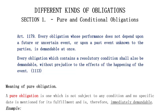Why is it very important that we have to understand the different kinds of obligations? Basically, the importance is that liabilities differ among the different kinds of obligations, and at the same time, the compliance and remedies of parties differ as well. So it's very important. For pure and conditional obligations, it has something to do with the demandability of the obligation.